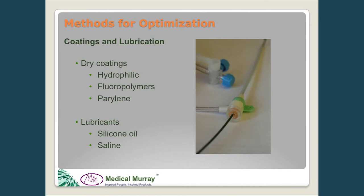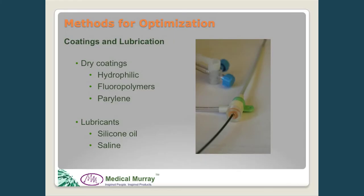Coatings and lubrication can be a real game changer. In applications where high flexibility is needed, we can implement coatings to reduce the loads required and reduce the amount of reinforcement needed to move components. There are a number of different coatings available — hydrophilic coatings, fluoropolymers such as PTFE — and we can also use lubricants like silicone oil to facilitate motion between components.